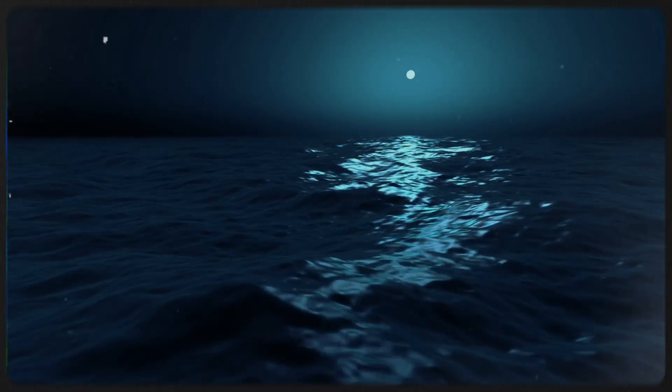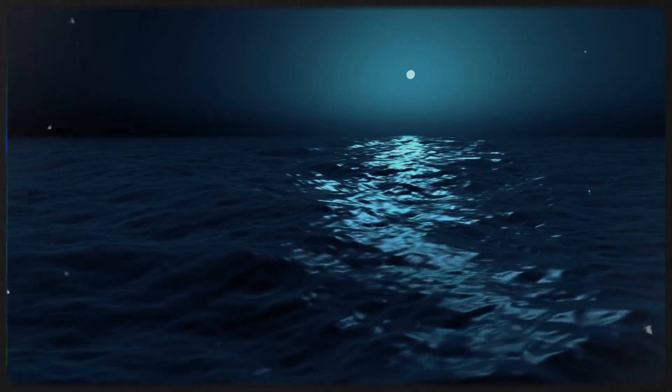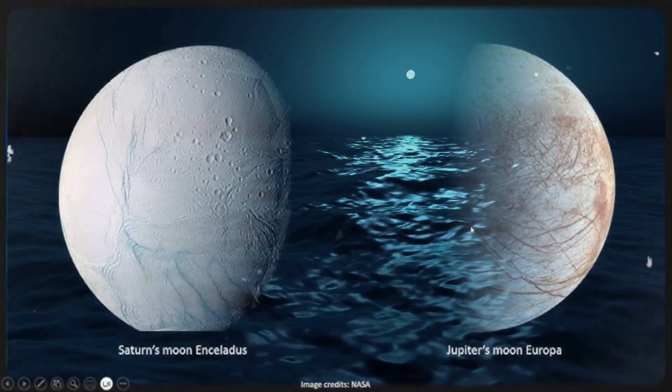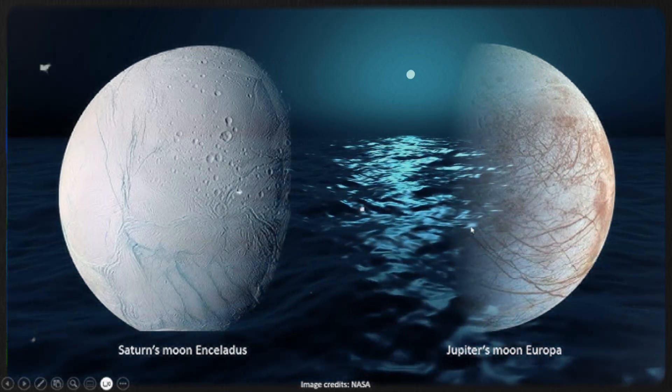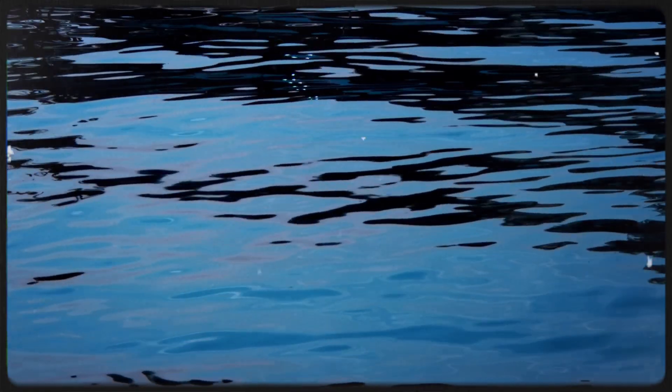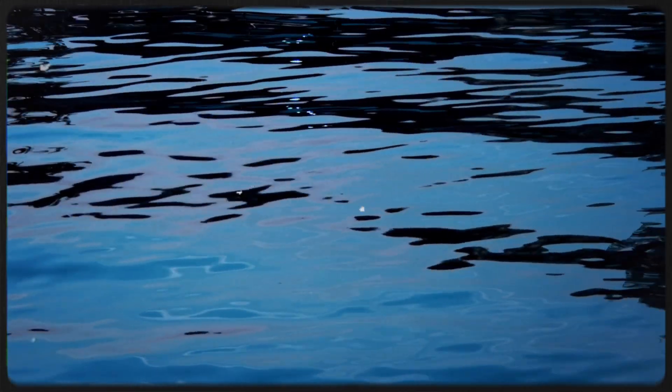However, the most astonishing revelation was the potential presence of subsurface oceans, similar to those found beneath the icy shells of Europa and Enceladus in our solar system. These hidden oceans could be warmed by the planet's internal heat or by tidal forces generated by its close orbit around Proxima Centauri. If such oceans exist, they would be prime locations for searching for life beneath the frozen surface.